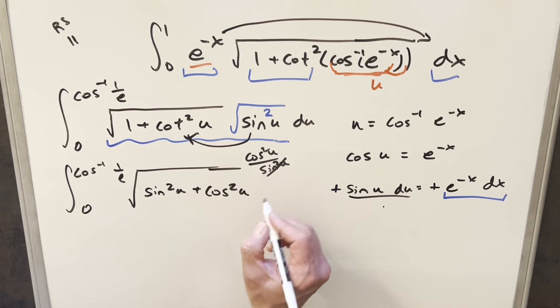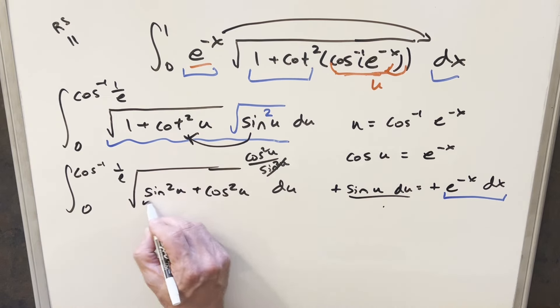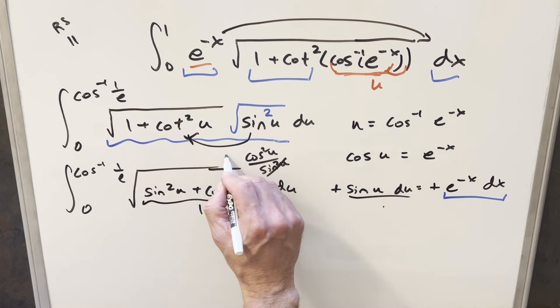But sine squared plus cosine squared, this is all one inside the radical. So this all goes away. And this whole integral just reduces to one.